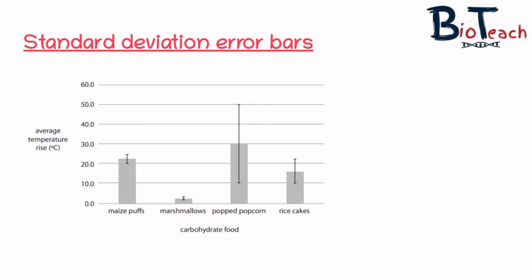Now to develop this a little bit further, we need to talk about standard deviation error bars. An error bar is basically just a line through a point on a graph that is parallel to one of the axes, and it represents the uncertainty or the variation of the coordinate of that particular point.